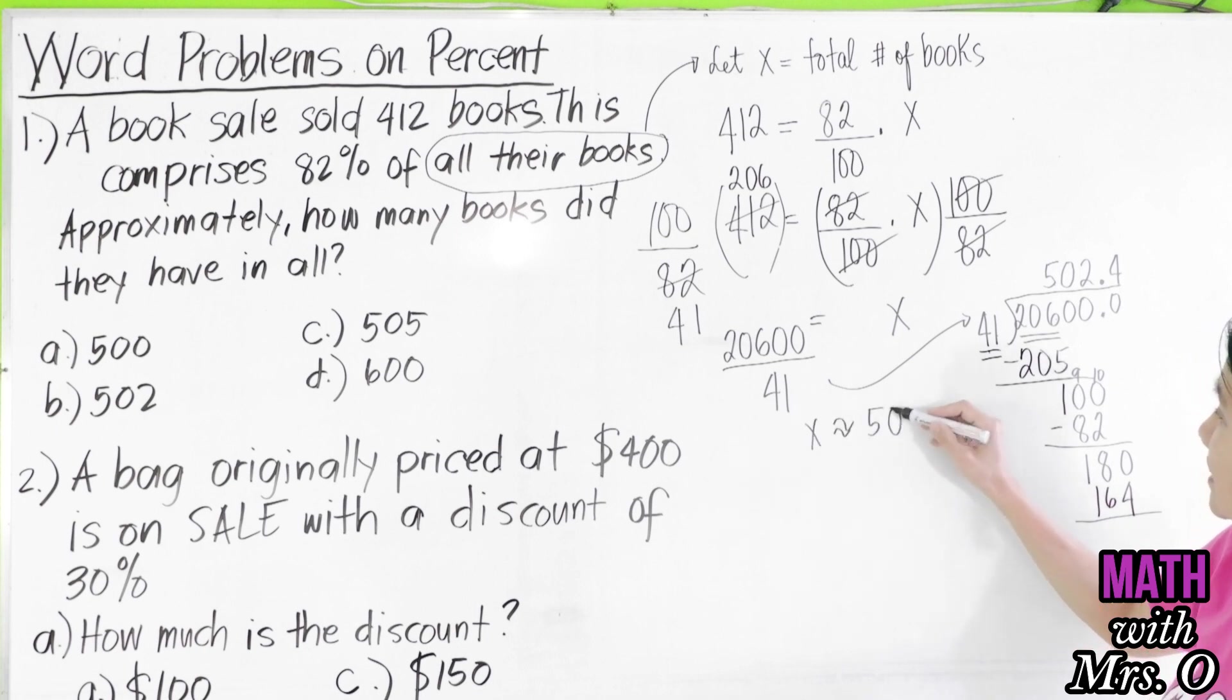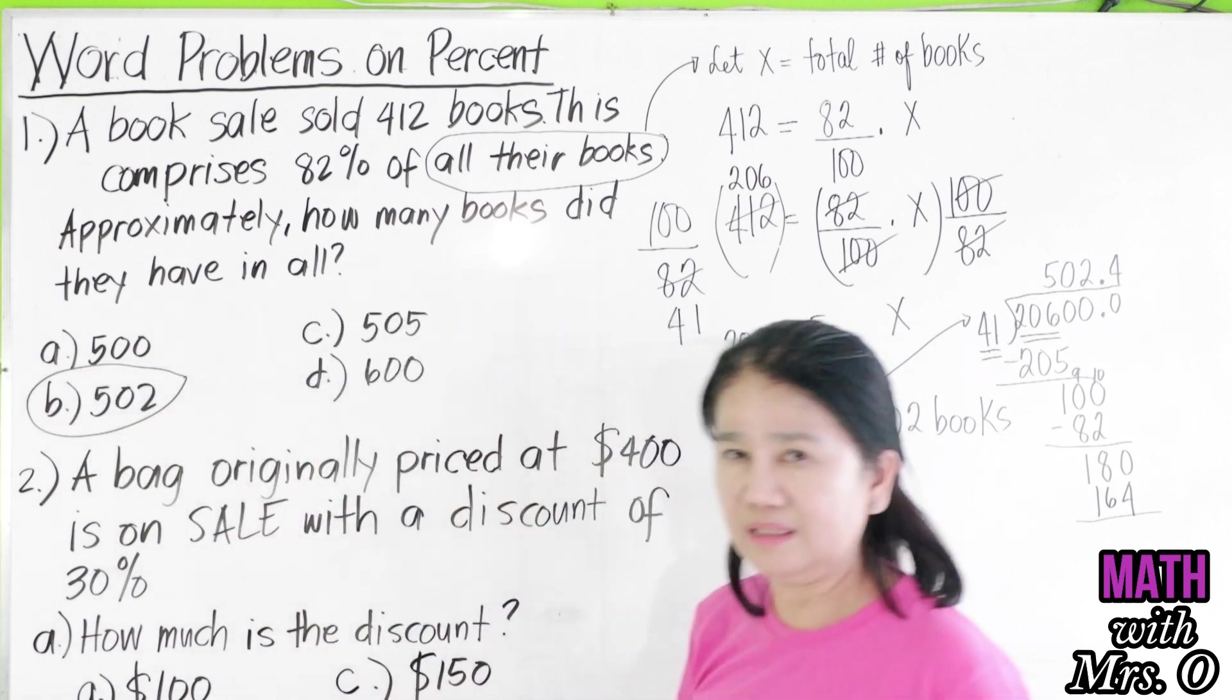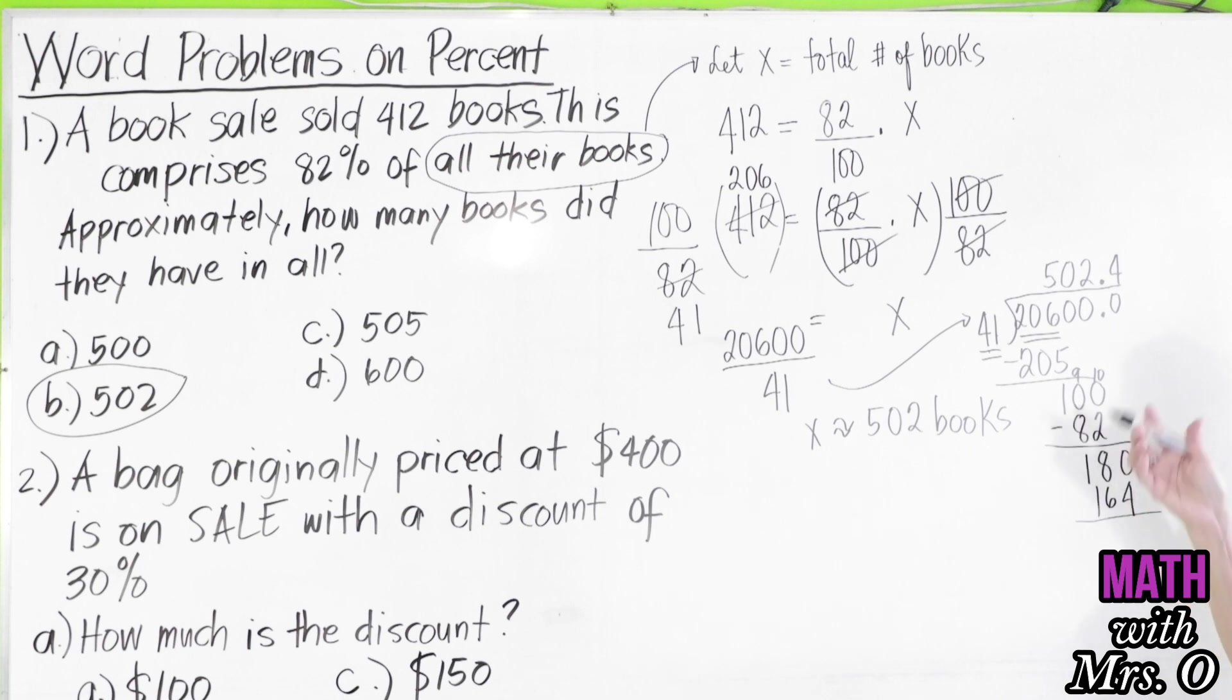approximately 502 books in all. So, we go back. Our final answer is letter B. I hope you understood that we cannot have 0.4 books. So, we have to finalize our answer to be 502 books.